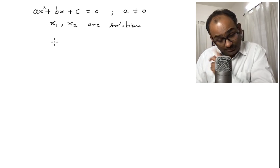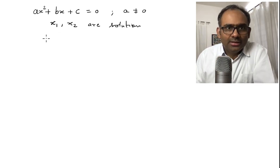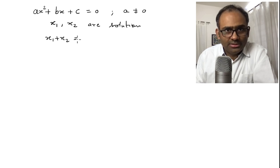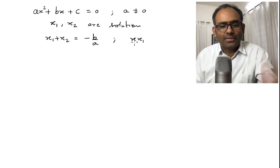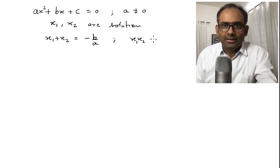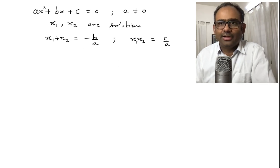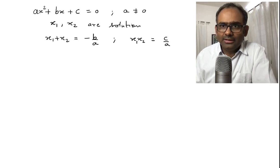You can easily check that x1 plus x2 meaning the sum of solutions is equal to minus b over a and if you take the product x1 times x2 then that is equal to c over a and that you can easily verify by looking at the solution.